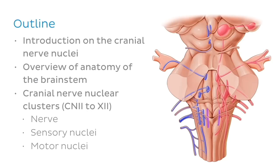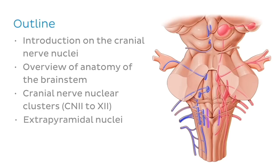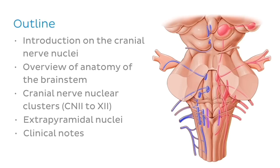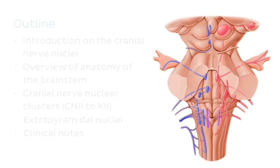We'll present the nuclei of each nerve grouped as sensory or motor when that grouping is applicable. Once we're done presenting each cranial nerve nuclear cluster, we'll also talk about some important nuclei of the extrapyramidal system present in the brainstem. Finally, we will make a clinical correlation by discussing the pupillary reflex and a hypothetical clinical case where that reflex is absent.